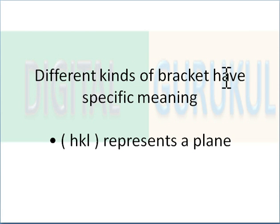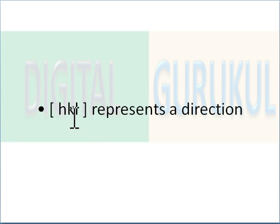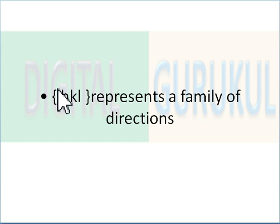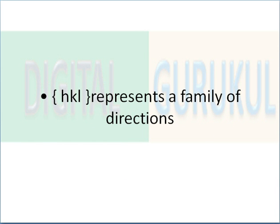Different kinds of brackets have different specific meanings, so it's very important to know about the brackets. A round bracket or parenthesis represents a plane. A square bracket represents a direction. An angle bracket represents a family of directions. And curly brackets or braces represent a family of planes.